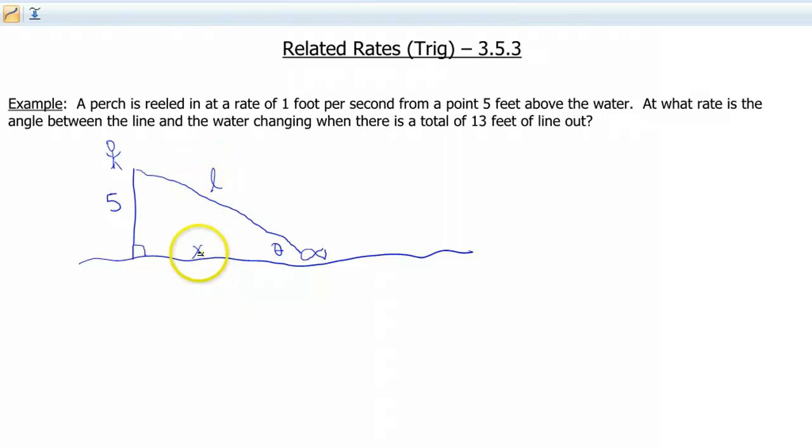So again, X and L are changing as we are reeling this in. Our triangle starts out with a really long hypotenuse and then the hypotenuse is getting shorter and shorter. So we need this theta, and I know the side that's opposite, and then I also know something about this L. So what is going on with this L? Well, it's telling us that it's being reeled in at a rate of 1 foot per second. So if we do DL DT, so that's the change in line per time, that's gonna be 1 foot per second.